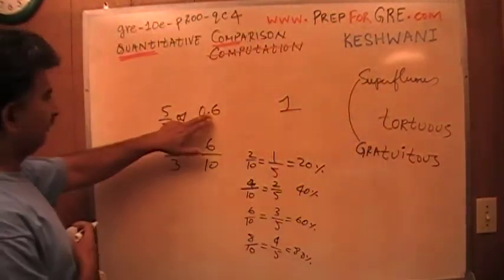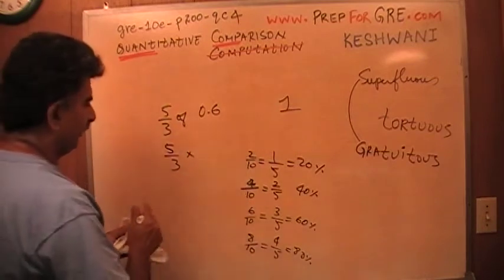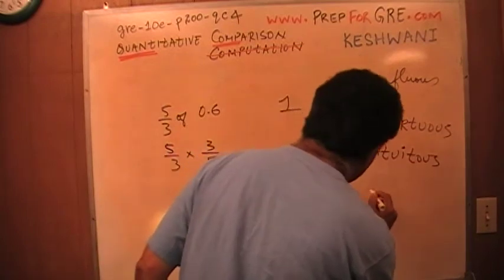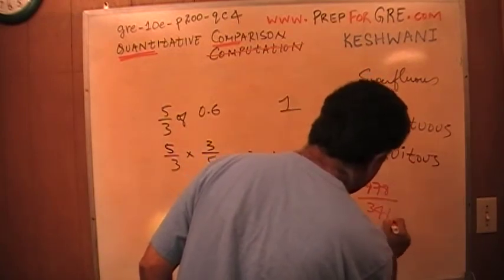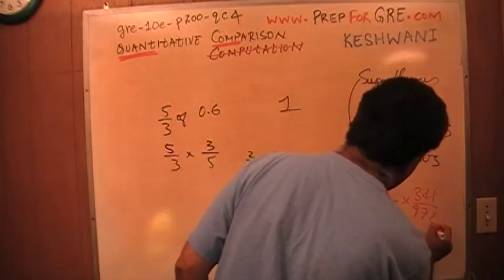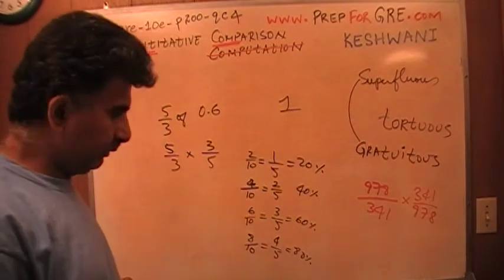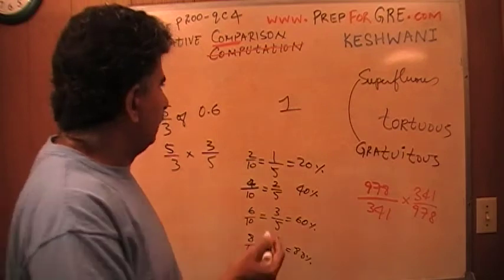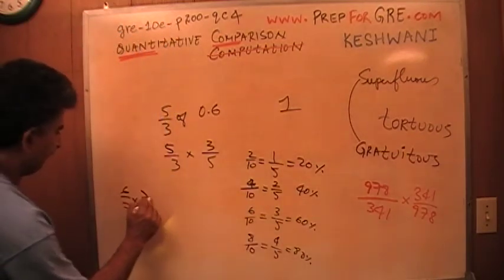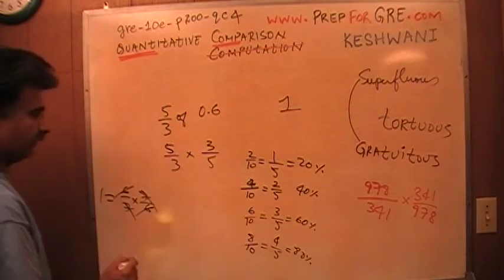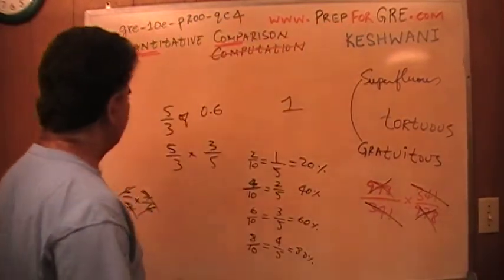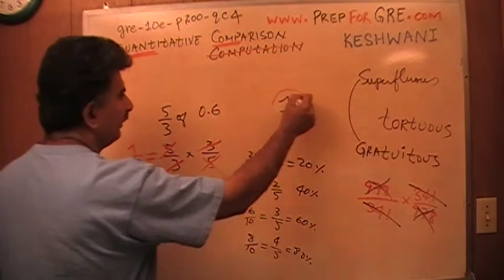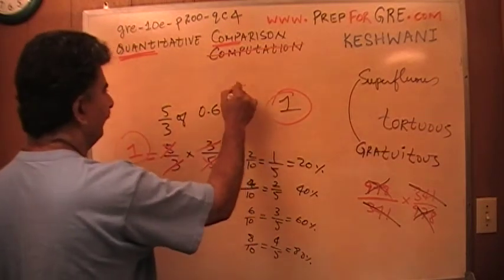So five-thirds times three-fifths. Can you quickly tell me how much is 978 over 341 times 341 over 978? I hope you can see right away that it is one, because they are reciprocals. The product of two numbers where one is the reciprocal of the other is one. Six-sevenths times seven-sixths: the sixes cancel, the sevens cancel — this is one. Same thing here: the three cancels with the three, and the five cancels with the five. It equals one. In the other column we also have one. The answer is C.